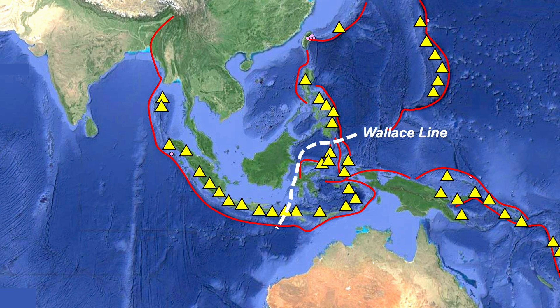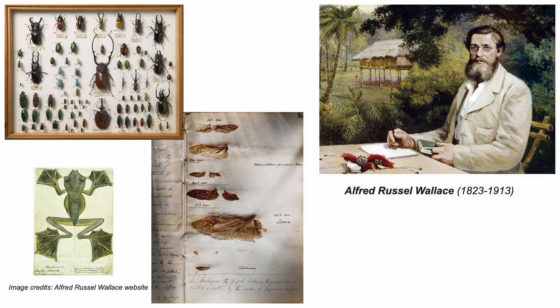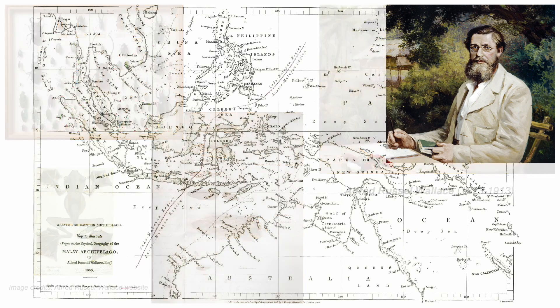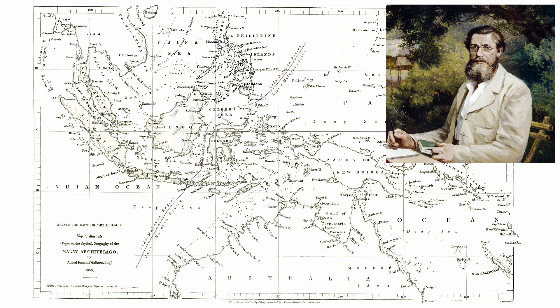The most long-standing and best-known apparently non-geological line is the Wallace Line. It's a name given to a boundary proposed by the 19th century naturalist, well known for coming up with the notion of evolution by natural selection independently of the much more famous Charles Darwin. Alfred Wallace established the idea of biogeography, demonstrating that different regions, even in quite close proximity, can have significant differences in flora and fauna.